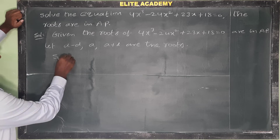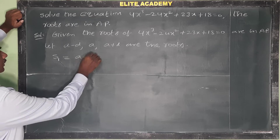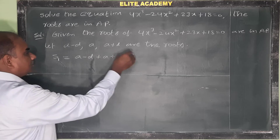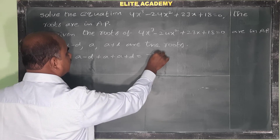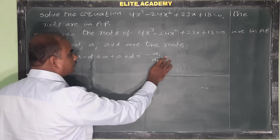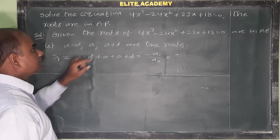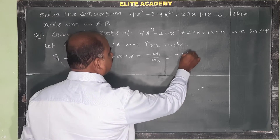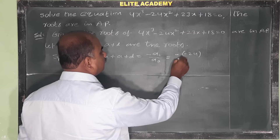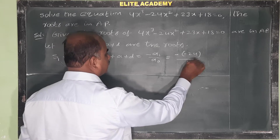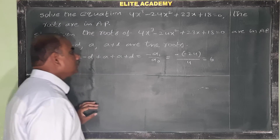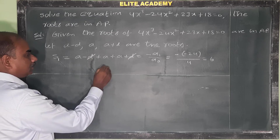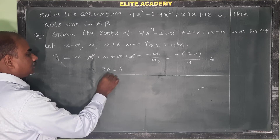Calculate S1, the sum of the roots. Sum of roots equals (a minus d) plus a plus (a plus d). By Vieta's formula, this equals minus a1 by a0, which is minus(minus 24) by 4, giving 6. The d terms cancel, leaving 3a equals 6, therefore a equals 2.